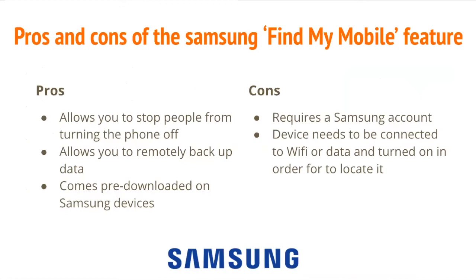The pros and cons of the Samsung Find My Mobile feature. The pros are that it allows you to stop people from turning the phone off so that you aren't able to track it, it allows you to remotely back up data, and it comes pre-downloaded on Samsung devices. The cons are that it does require a Samsung account — you need to have a Samsung phone — and the device needs to be connected to Wi-Fi or data and turned on in order to locate it.